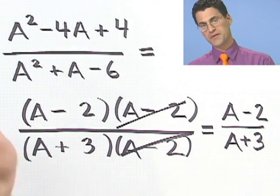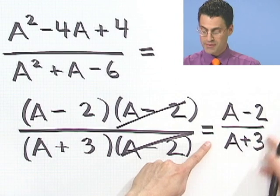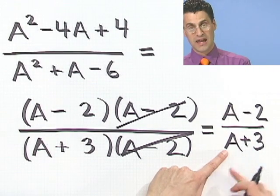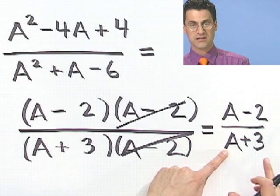But again, I just caution you about the domain issue. The domain of this, you can see easily, is everything except when A equals minus 3.